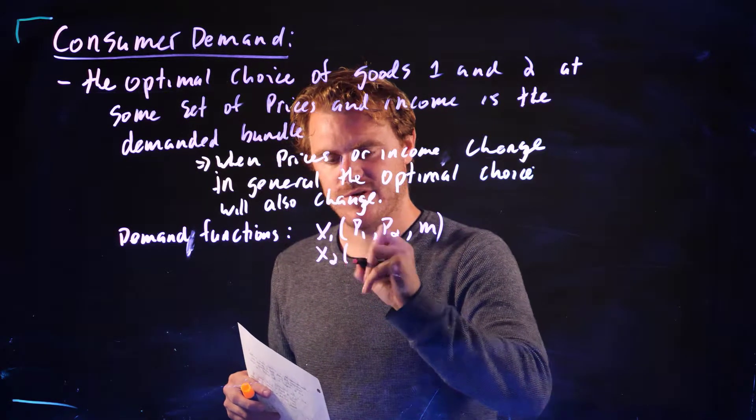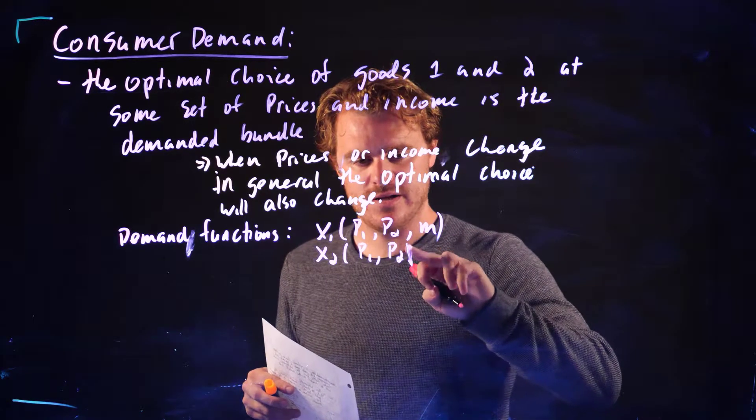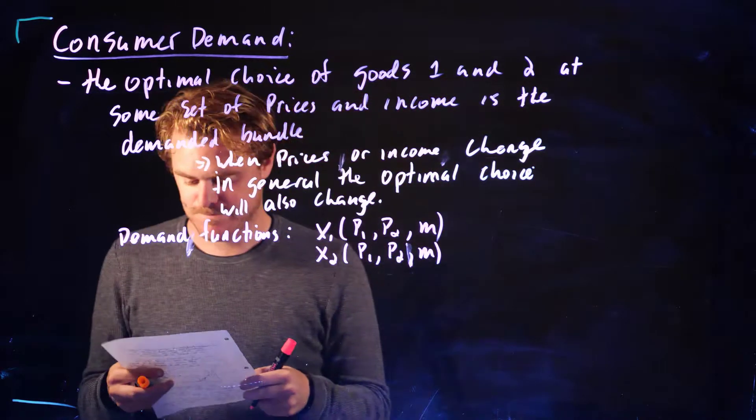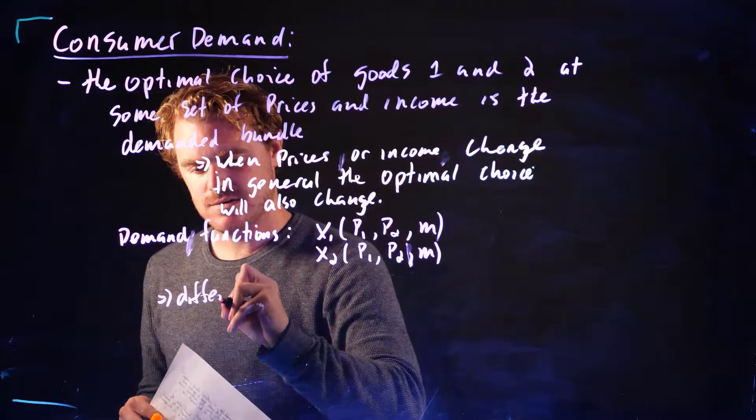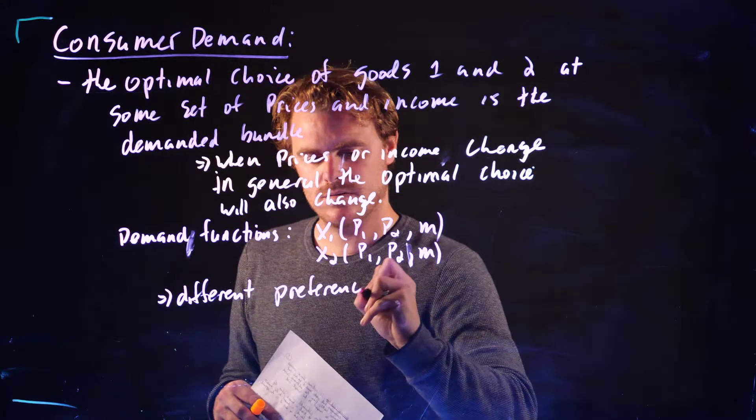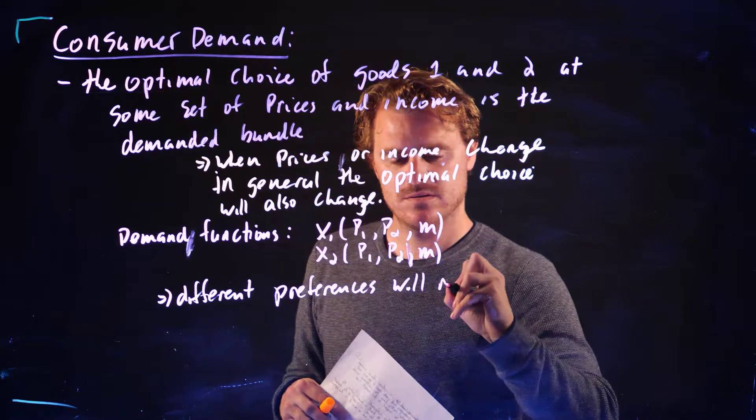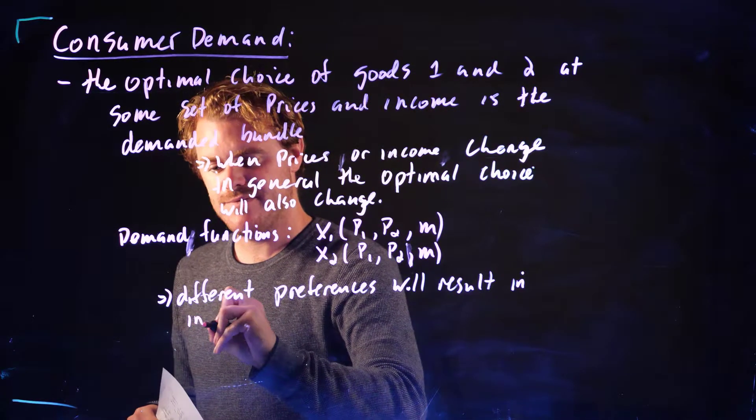And the same thing for the amount of good 2. It's a function of the price of good 1, the price of good 2, and income. And different preferences will result in different demand functions.